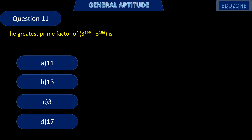The greatest prime factor of 3 raised to 199 minus 3 raised to 196. Now, 3 raised to 199 can be written as 3 raised to 196 into 3 cube minus 3 raised to 196.